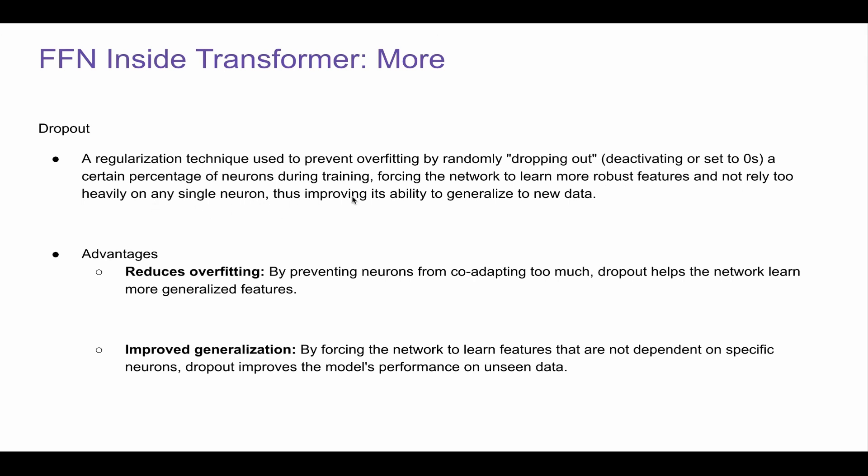This will also improve the ability to generalize to new data. The advantages are: it reduces overfitting by preventing neurons from co-adapting too much, and it improves generalization by forcing the network to learn features that are not dependent on any specific neurons.